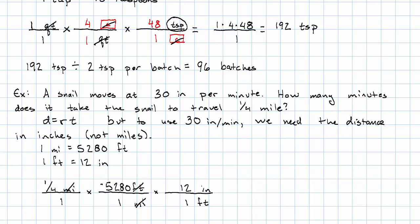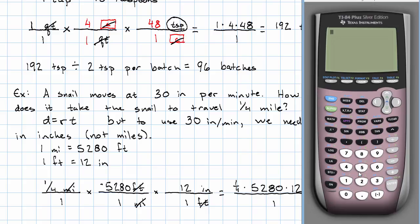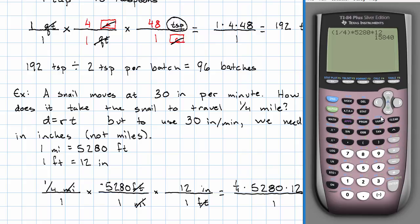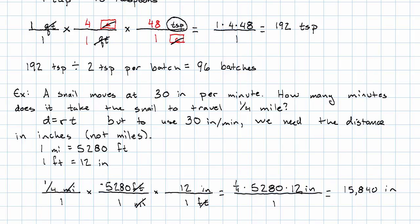Miles will cancel. Feet will cancel. And we'll be left with just inches. How many? One-fourth times 5,280 times 12 inches. And just one in the denominator. So we work out one-fourth times 5,280 times 12. And we get 15,840. So a quarter mile is 15,840 inches.